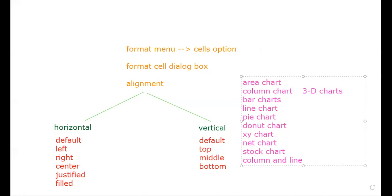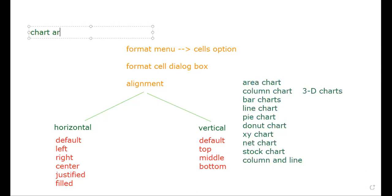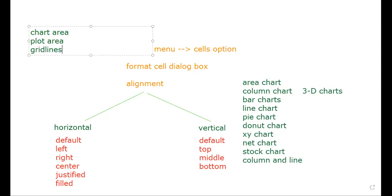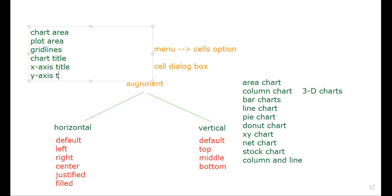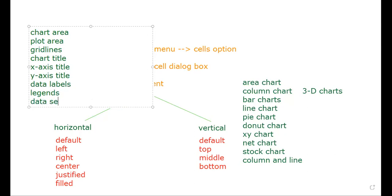The components of charts are: chart area, plot area, chart title, grid lines, legends, X axis, Y axis, X axis title, Y axis title, data labels, and data series.